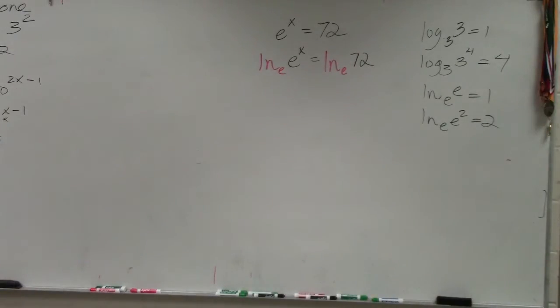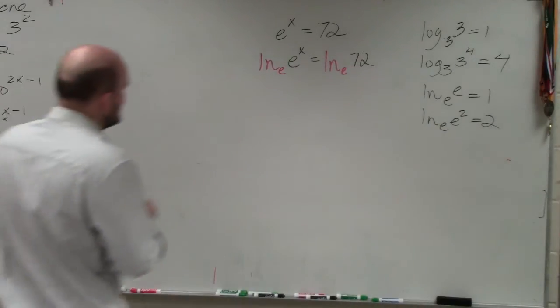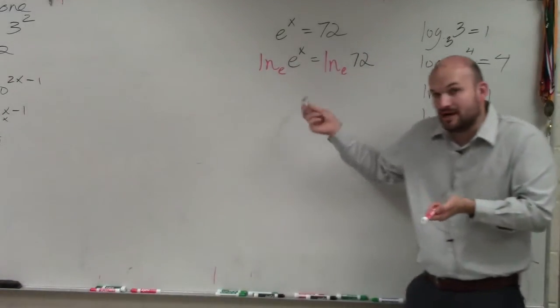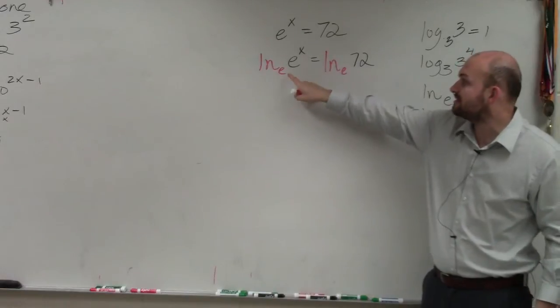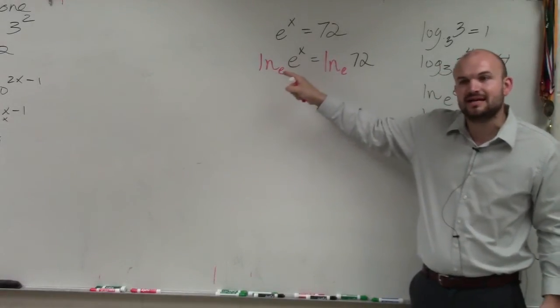Now, why would I take the ln of both sides? Well, by applying the one-to-one property, if you can see that now when I have the ln, what's important about this is I didn't change the problem. You can take the ln of both sides. You're not affecting the problem.